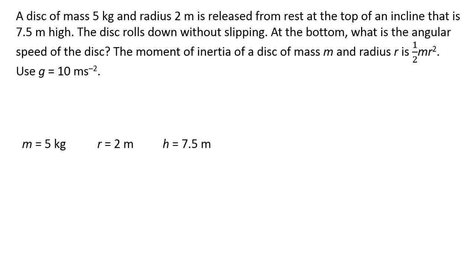The disk rolls down without slipping. At the bottom, what is the angular speed of the disk? The moment of inertia of a disk of mass m and radius r is 1/2 mr². Use g equals 10 m/s².